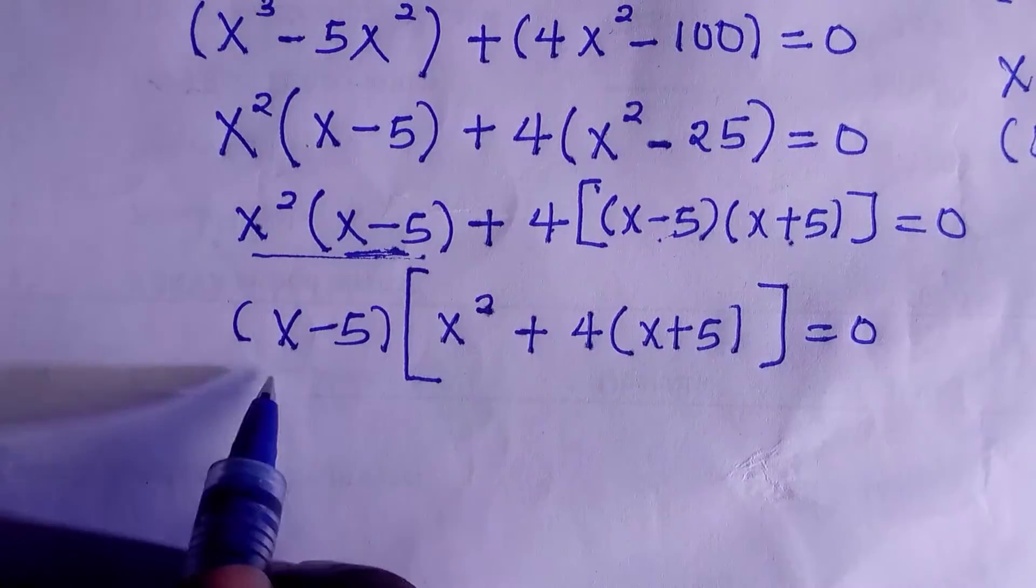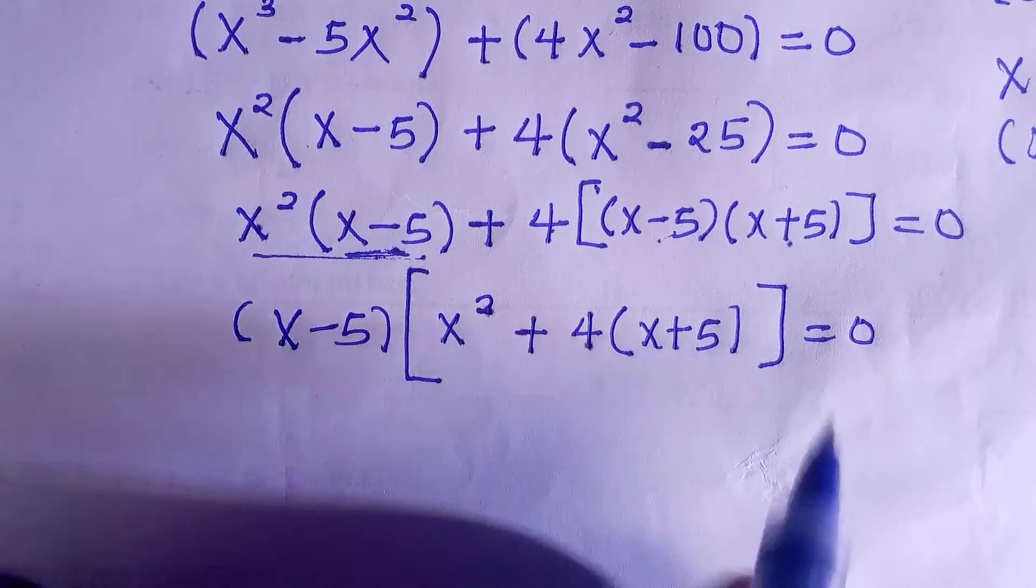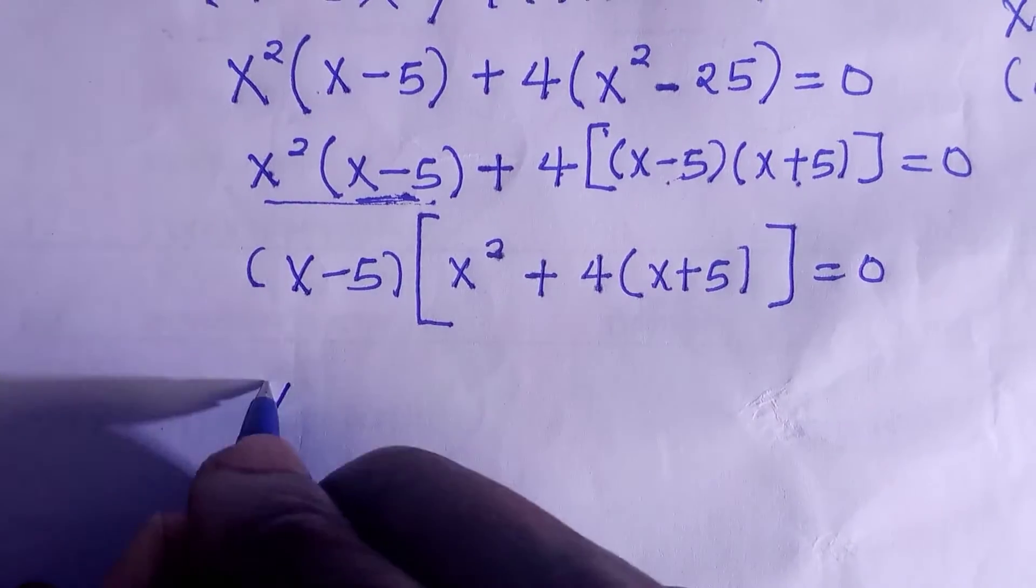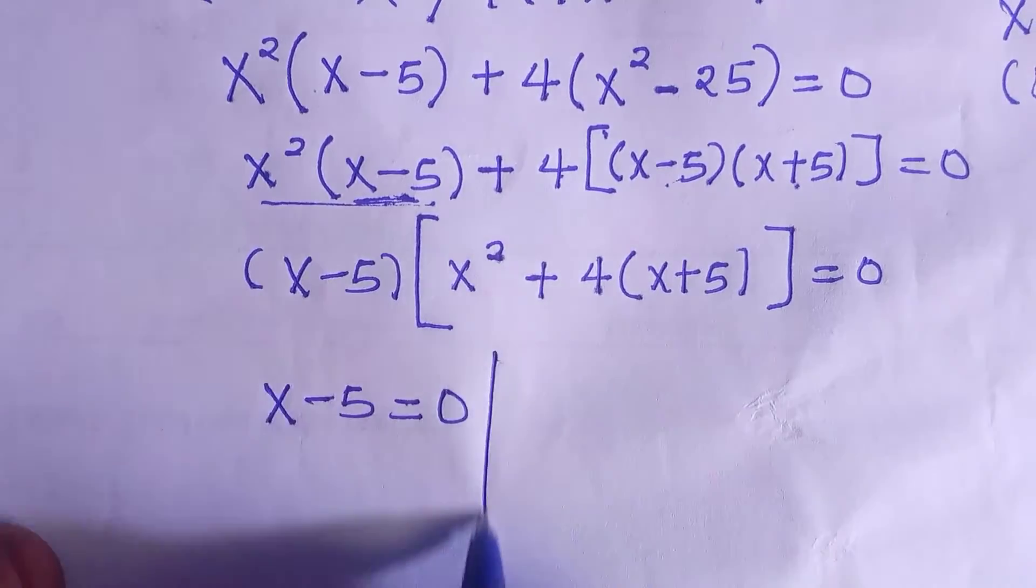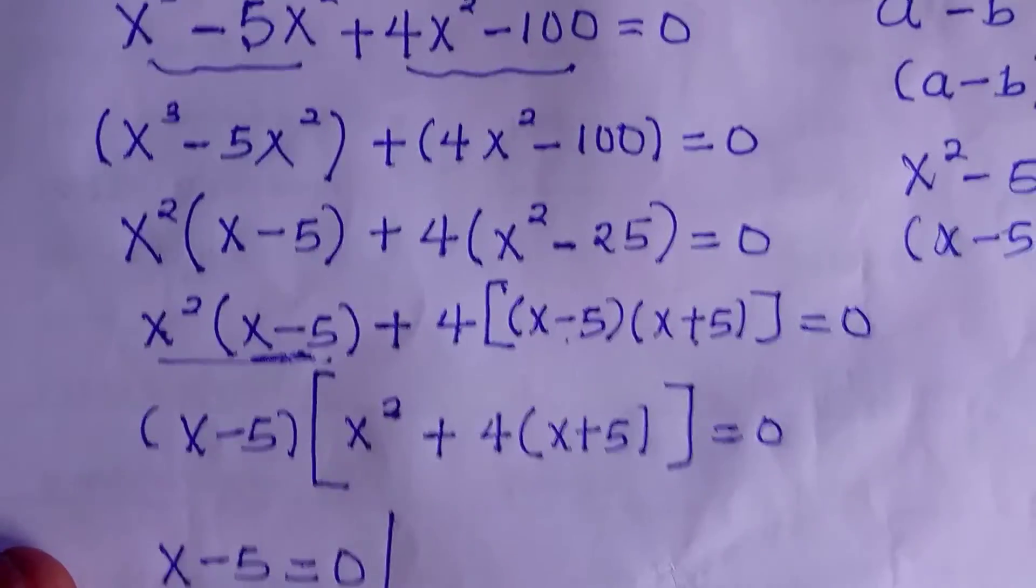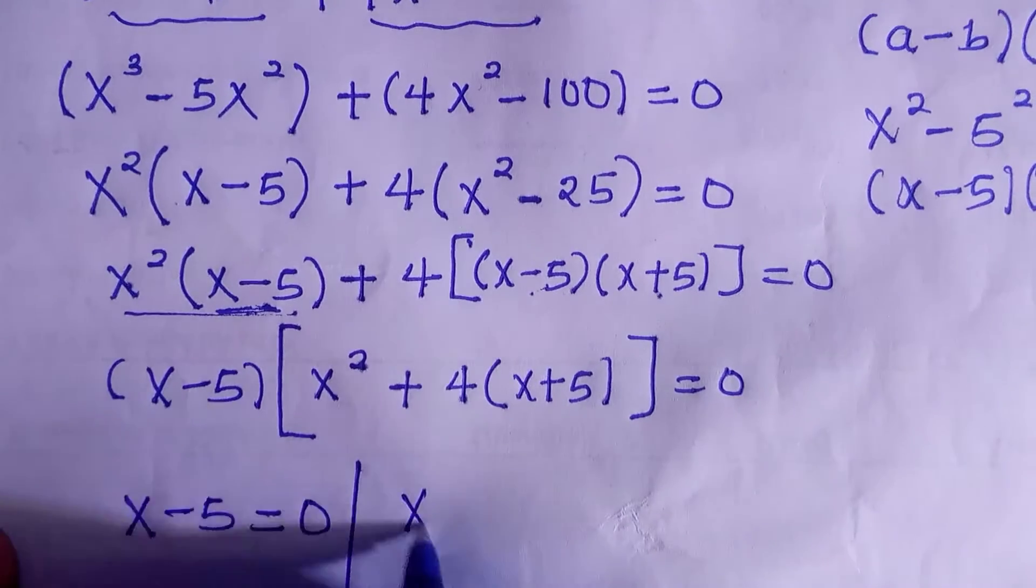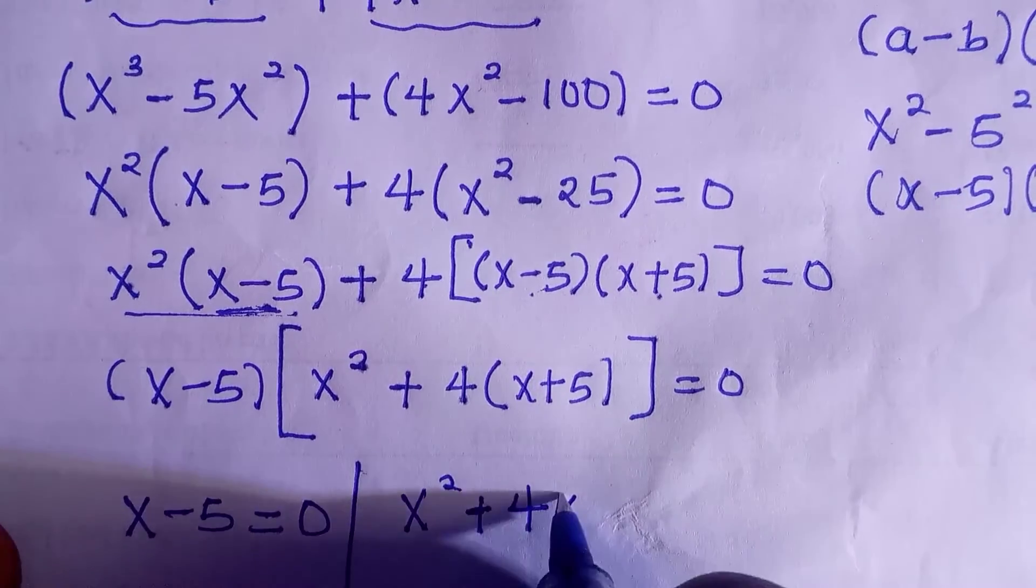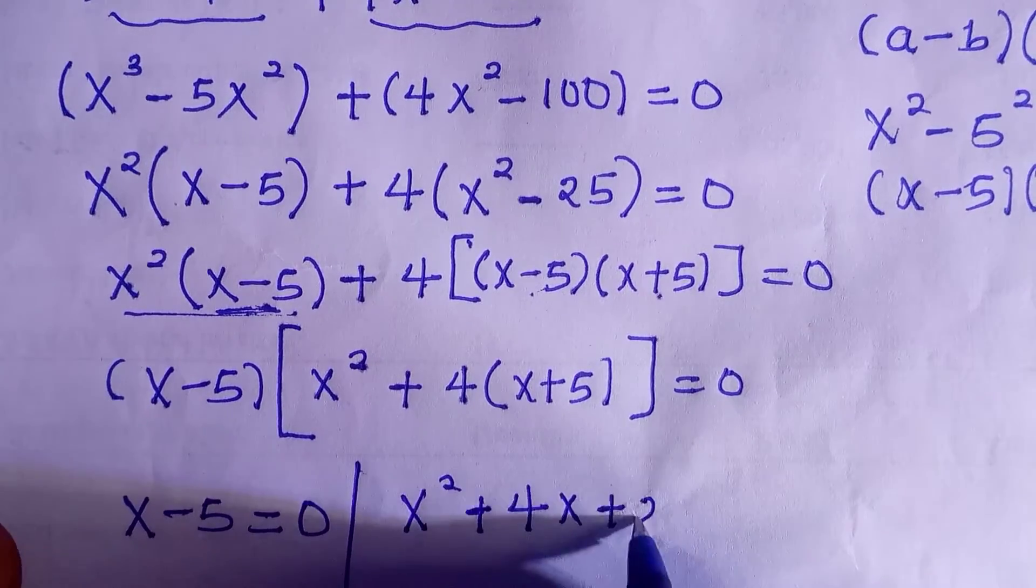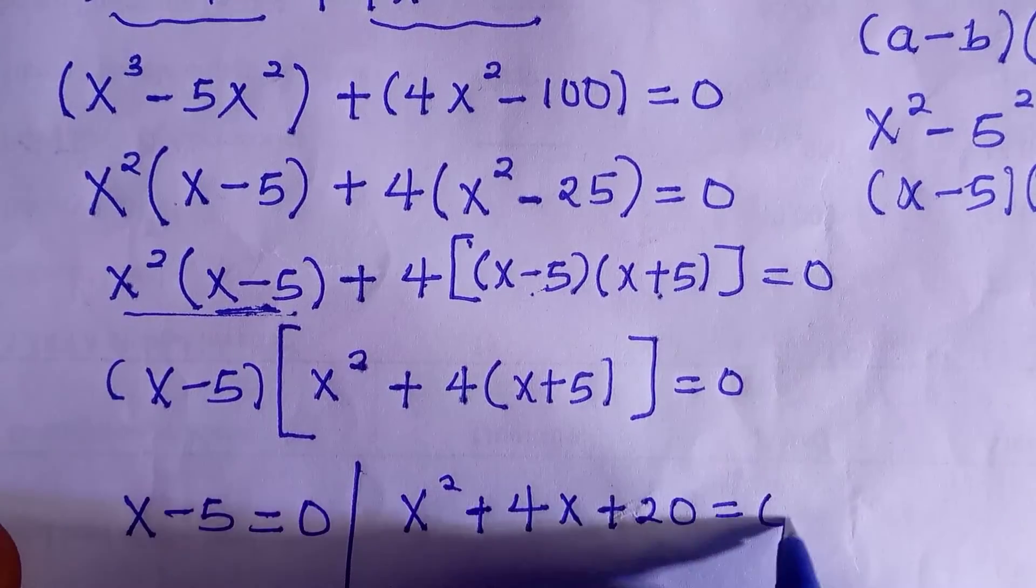Then we have x minus 5 and another one in this bracket. So we let this one equal to 0. And the second one which is x raised to the power of 2, if you open the bracket, we have plus 4x plus 20 everything equals to 0.